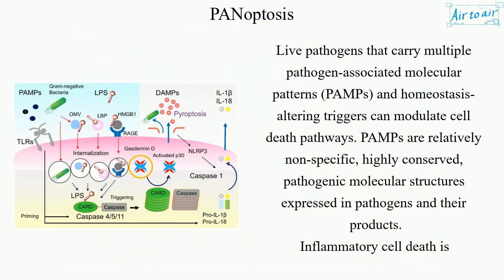Live pathogens that carry multiple pathogen-associated molecular patterns (PAMPs) and homeostasis-altering triggers can modulate cell death pathways. PAMPs are relatively nonspecific, highly conserved, pathogenic molecular structures expressed in pathogens and their products.